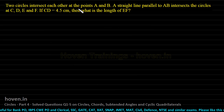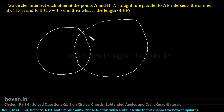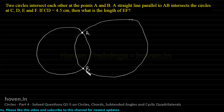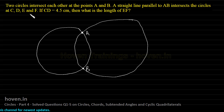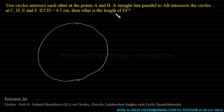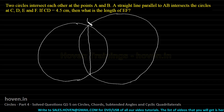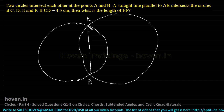Two circles intersect each other at the points A and B. Let us draw those two circles — this is one circle and this is a second circle. These two circles are intersecting at A and also intersecting at B, so let us mark these points as A and B. Let us join A and B. Let the center of this circle be O and the center of the second circle be O dash.